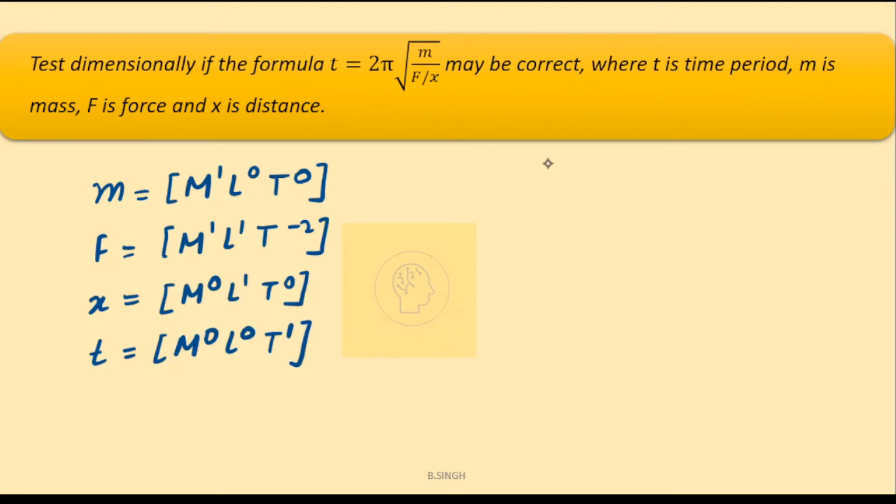So here the equation is t equals 2π. Now 2π is a constant so it doesn't have any dimensions. Let's substitute these dimensions on the left hand side as well as on the right hand side.